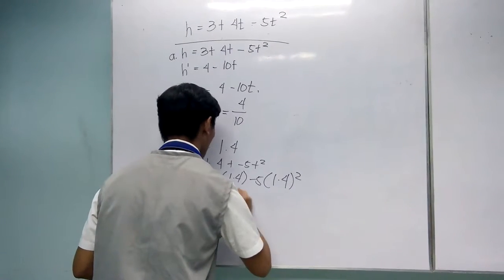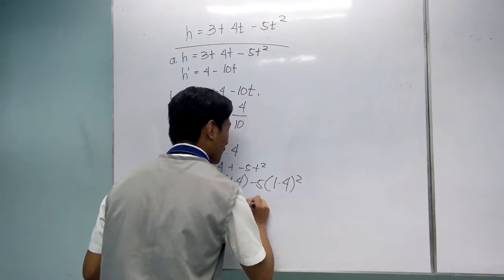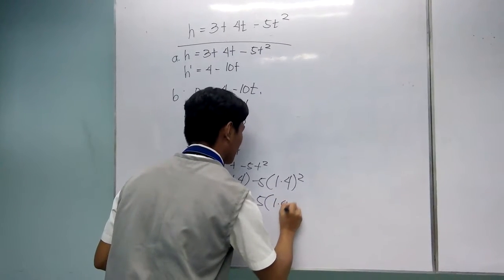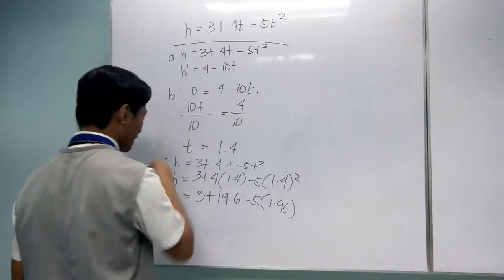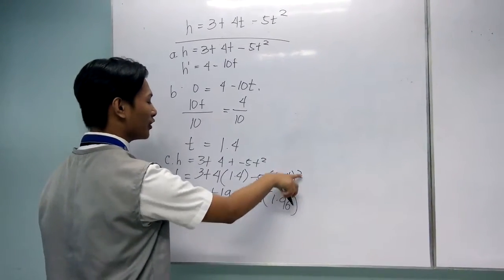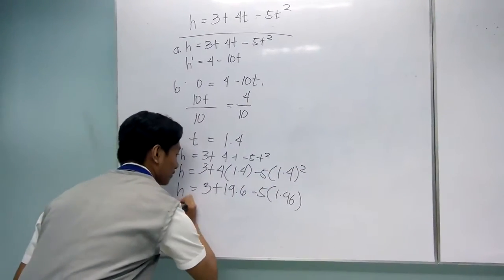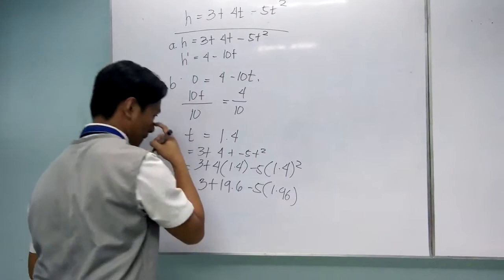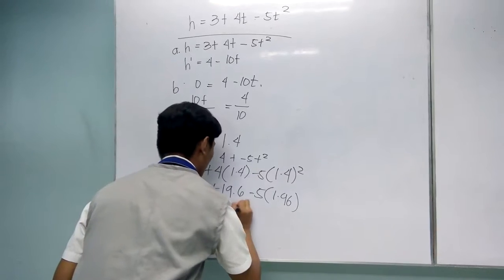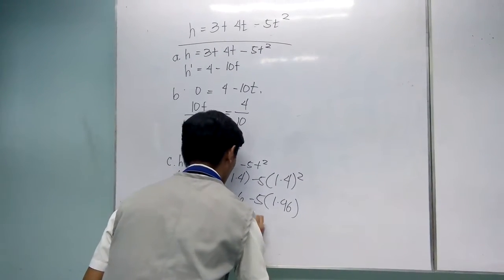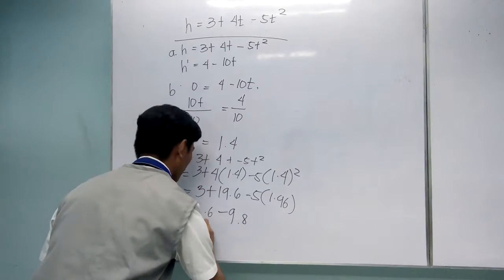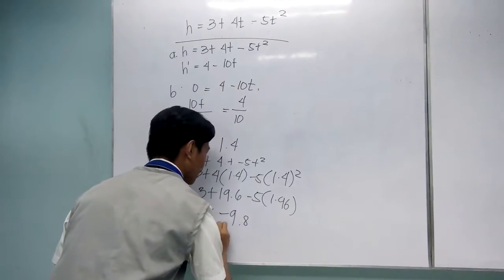H equals 3 plus 5.6 minus 5 times 1.96. This is from the 1.4 squared. So H equals 22.6 minus 9.8. So our answer is H equals 12.8.